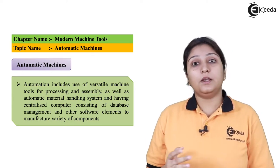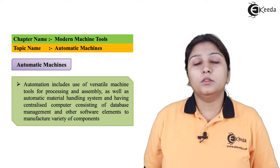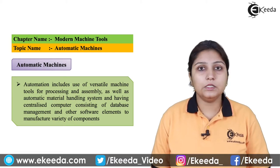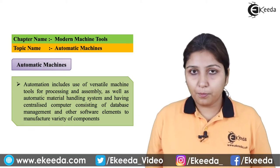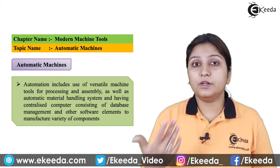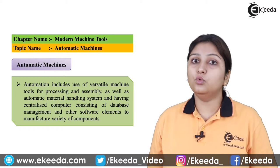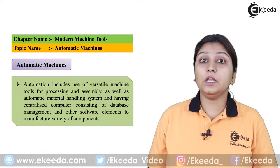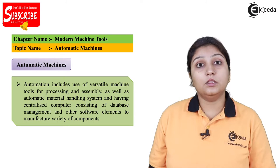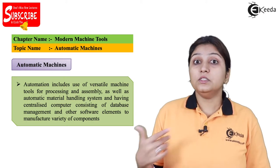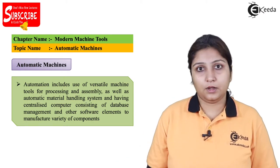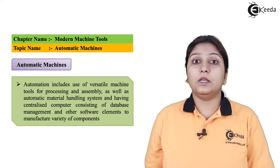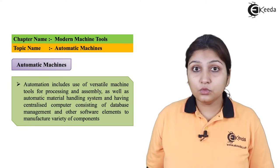For example, in an automatic lathe machine, the tool changing operation is governed by the CNC system. It gives the direction and the tool does the work. In the case of a swivel machine or any other turret lathe machine, the tool changing is again controlled automatically. This is how automatic lathe machines work.